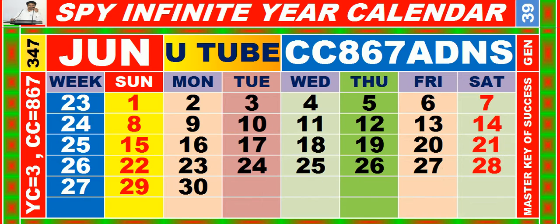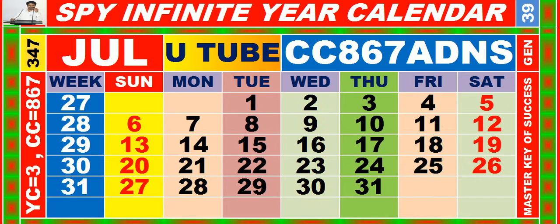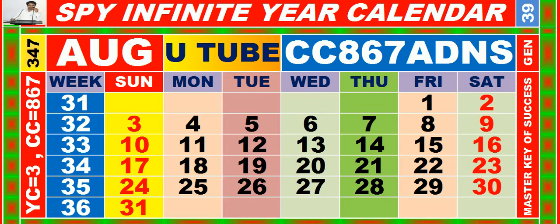Calendar for the month of June, having calendar code equal to 8, 6, 7. Calendar for the month of July, having calendar code equal to 8, 6, 7. Calendar for the month of August, having calendar code equal to 8, 6, 7.